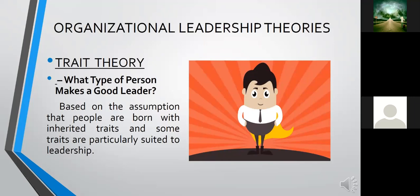Next, we have the organizational leadership theories. First is the trait theory, which is concerned with what type of person makes a good leader. It is based on the assumption that people are born with inherited traits and that some traits are particularly suited to leadership. Based on this theory, great leaders share common personality characteristics, and if you possess several — if not all — of those qualities or traits, you will also be considered a leader.